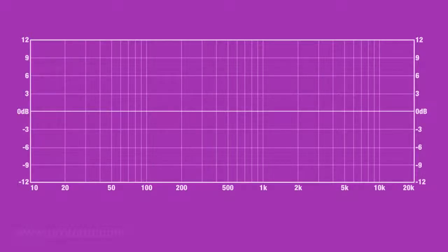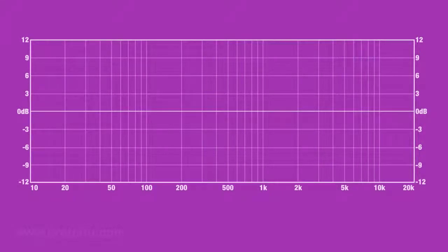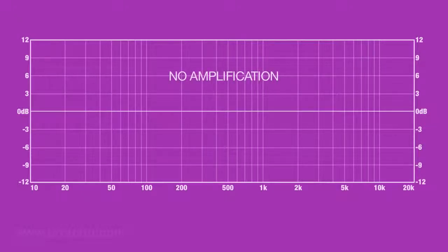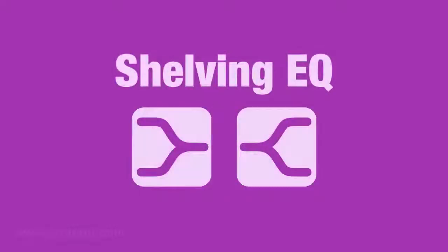In the center, we have a horizontal line which is called the zero line. In this state, the chart indicates that there is no amplification or reduction at any frequency. Let's look at one of the most basic EQs: the shelving EQ.